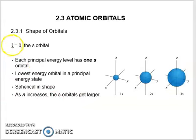When L equals zero, the orbital is s and the shape is spherical. S orbitals have only one orientation. Each principal energy level has one s orbital. It's the lowest energy orbital in a principal energy state, the shape is spherical, and as n increases, the s orbitals get larger.